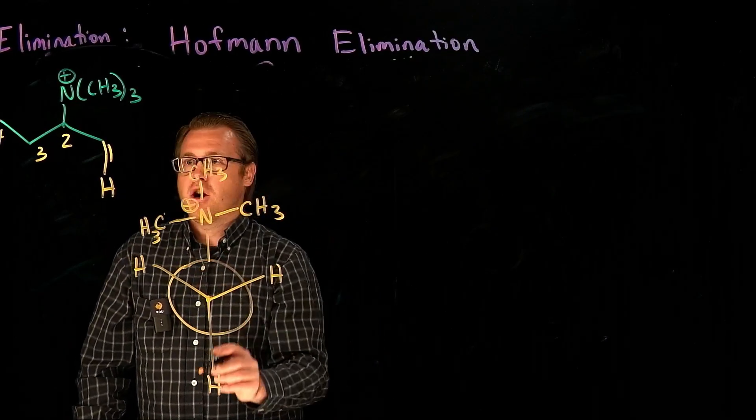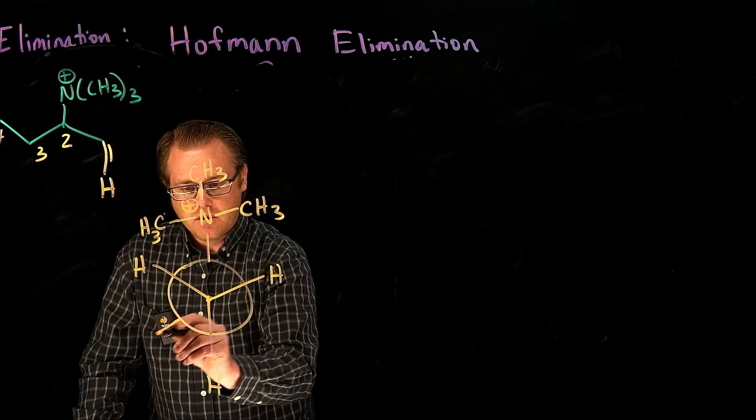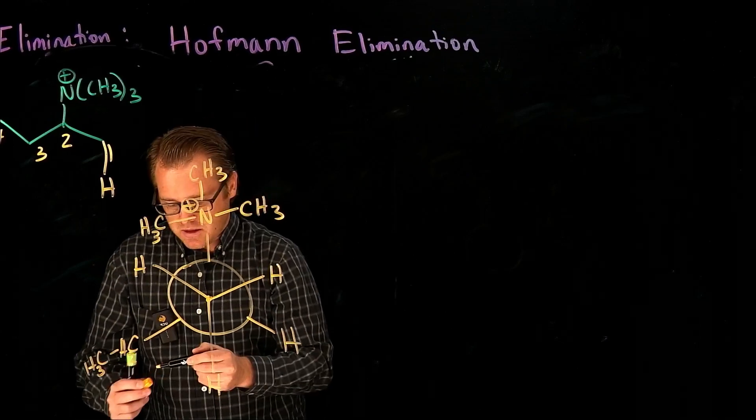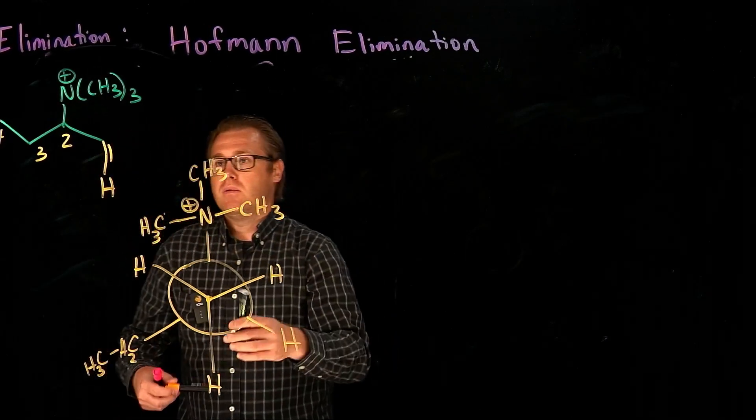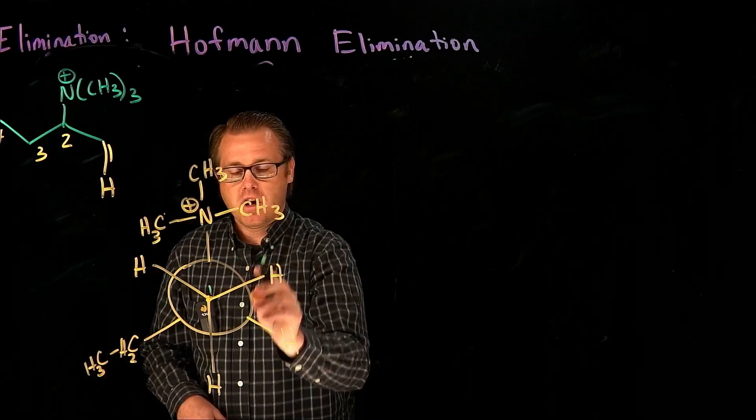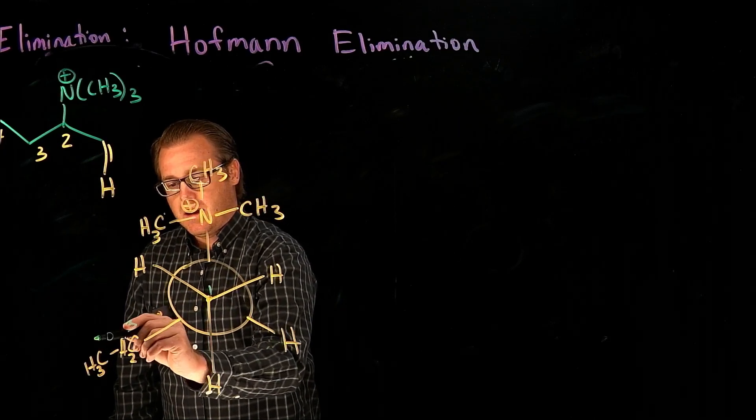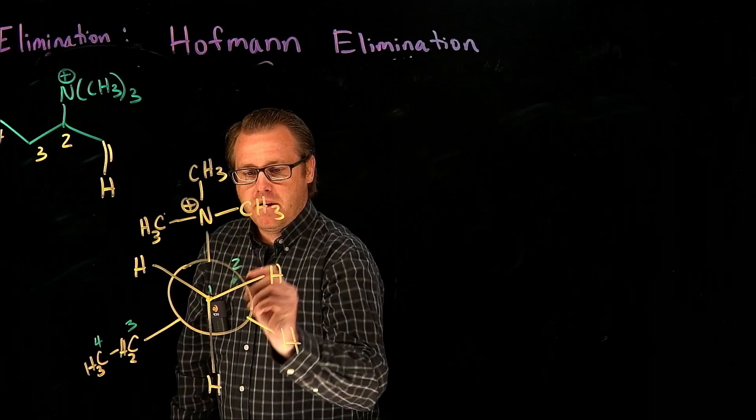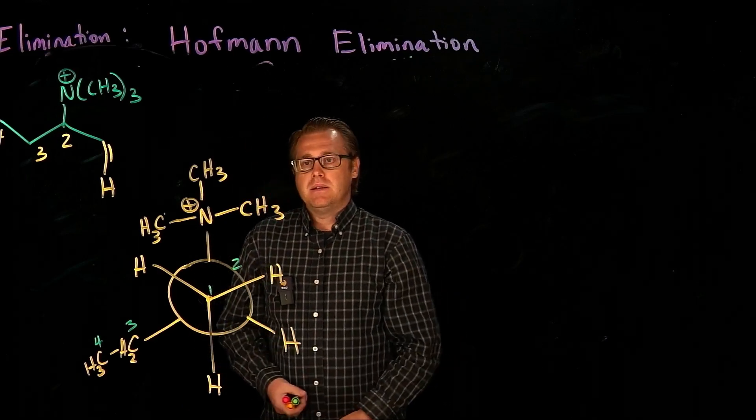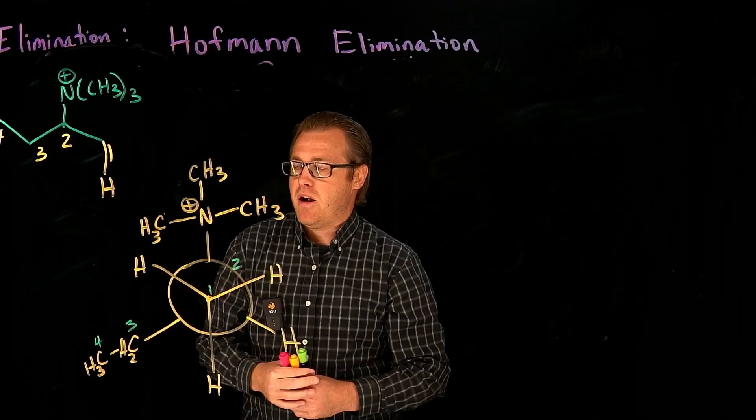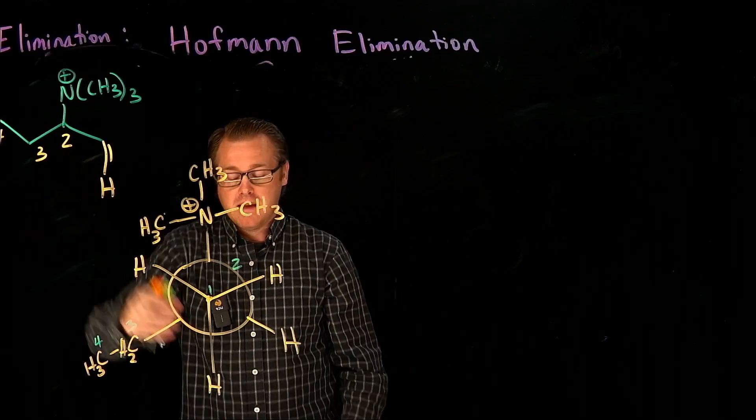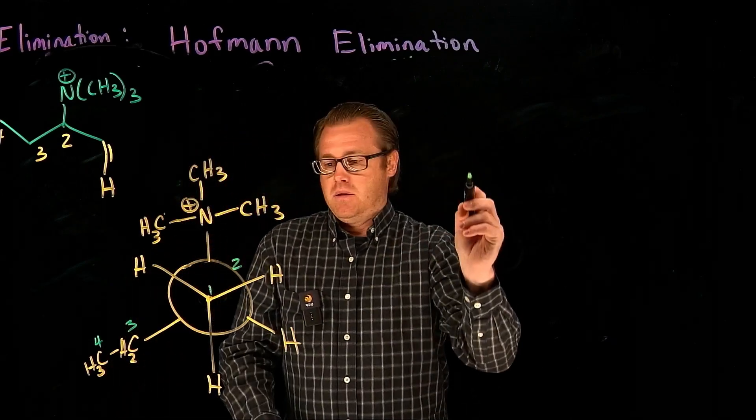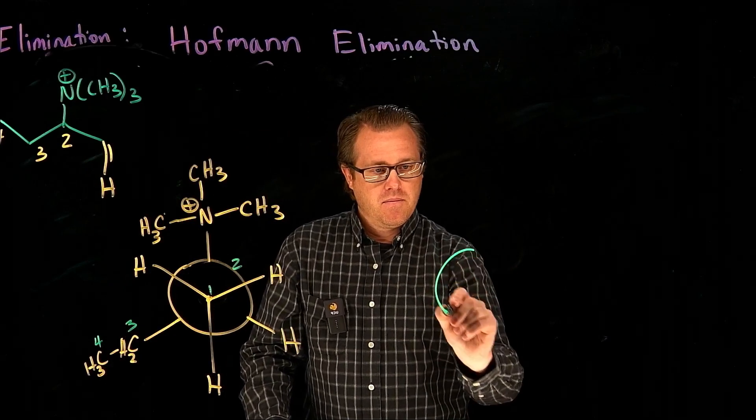We're going to have our quaternary ammonium salt up here, positively charged. That is on carbon 2, our back carbon. On our front carbon, carbon 1, we have three hydrogens. The circle is carbon 2 and what's attached to it? We have our ethyl, so CH2, CH3, and another hydrogen. That's carbon 1, the ring is carbon 2, and those would be 3 and 4.